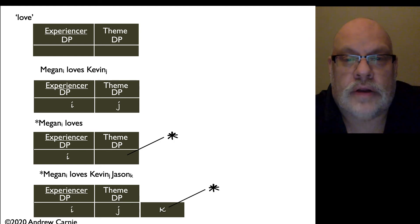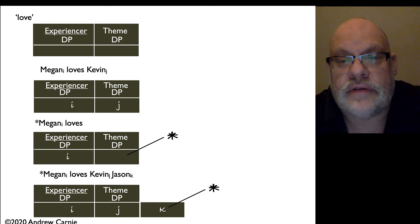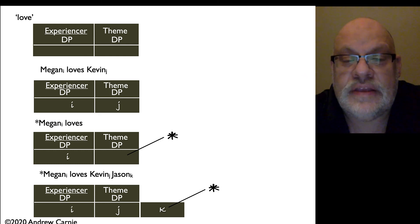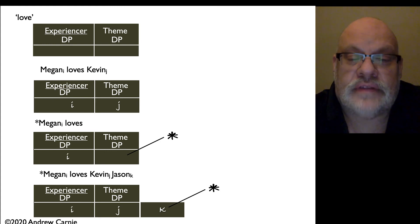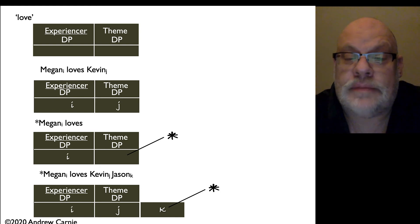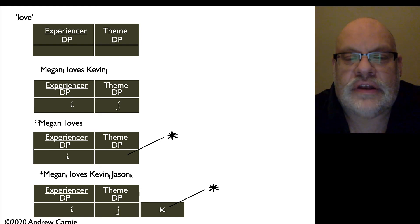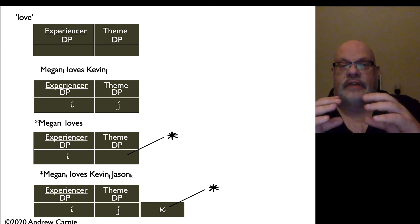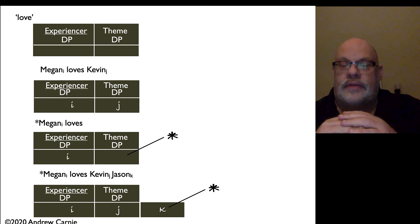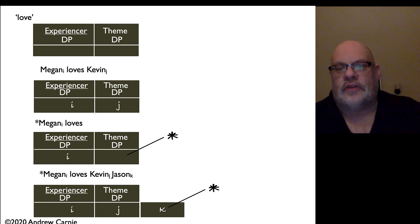This sentence is ameliorated by putting and between Kevin and Jason. In that situation, Kevin and Jason as a unit get the theme theta role, because you've used the conjunction — making them a single complex noun phrase.